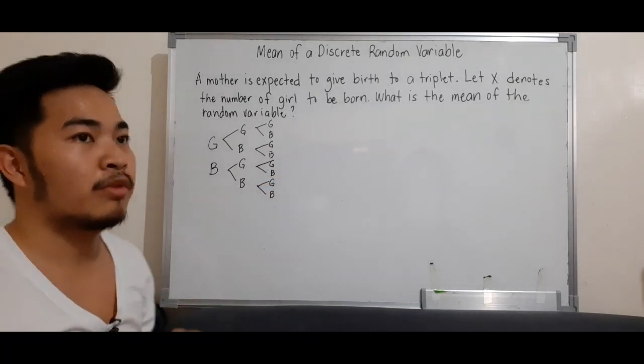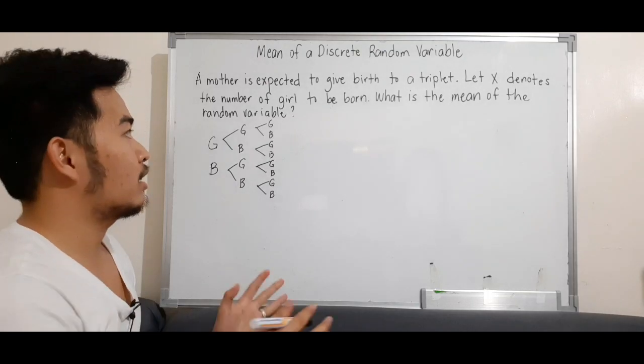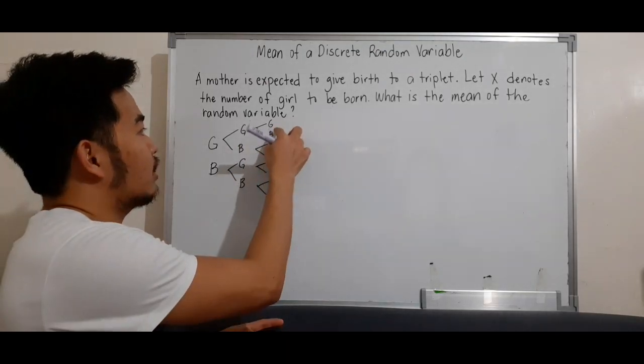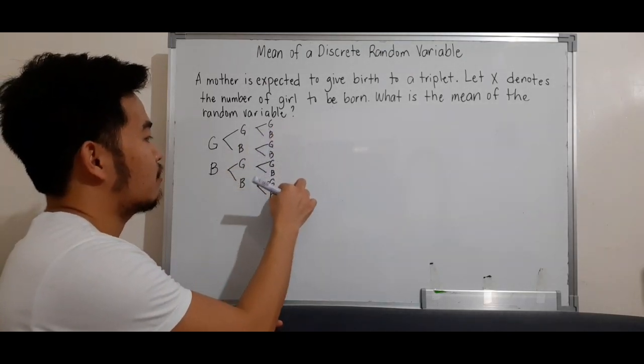So the total number of expected outcomes is eight: 1, 2, 3, 4, 5, 6, 7, 8.